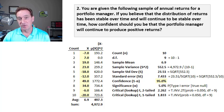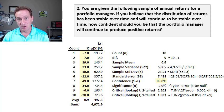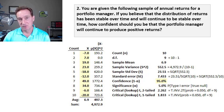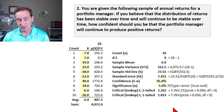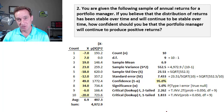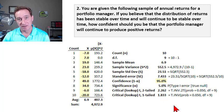There are three ways to test a sample mean. One, with a confidence interval. Two, with a test statistic. And three, probably most efficiently just with the p-value.